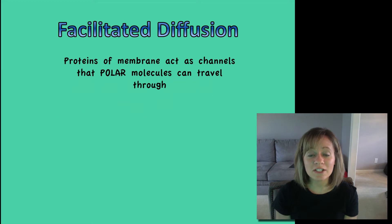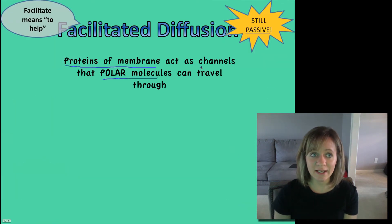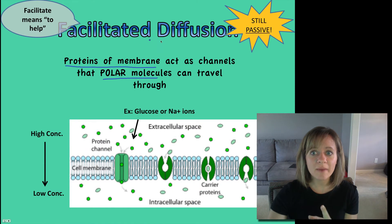Facilitated diffusion is another type of passive transport. It does not require energy. We're still moving from high to low. But this is when polar molecules or large molecules like glucose or water need some help. And they get that help from proteins in the membrane. So those proteins act as channels. So let's see what that looks like. Just a reminder, diffusion is still passive. Facilitate just means to help.